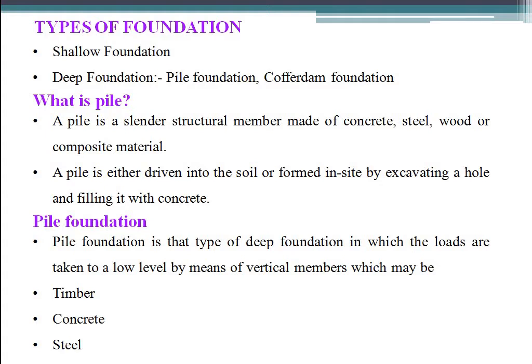A pile is either driven into the soil or formed inside by excavating a hole and filling it with concrete. It is a slender vertical member, just like a column, which can be made up of concrete, steel, wood, or composite material. Composite means made up of two materials such as concrete-steel or wood-concrete. You can make a pile first and put it inside soft soil, or you can excavate a hole as per your pile dimensions and fill it with concrete and steel. Pile Foundation is that type of deep foundation in which loads are taken to a low level by means of vertical members, which may be timber, concrete, or steel.